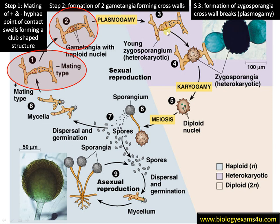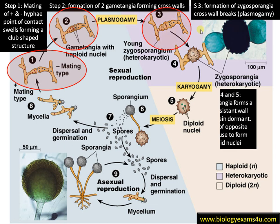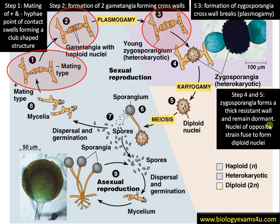The nuclei come into a common mass of protoplasm — plasmogamy has occurred — and the structure is now called the zygosporangia, with nuclei of both mating types in a common protoplasm. Steps four and five: the zygosporangia forms a thick resistant wall and remains dormant. It can remain dormant for two to three months to tide over unfavorable conditions.